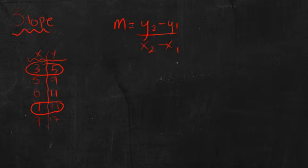So my first point, three, five, my second point, seven, 13. And I'll call this one X1, Y1, call this one X2, Y2. So all I got to do is plug it in.